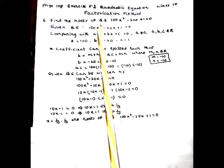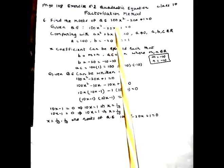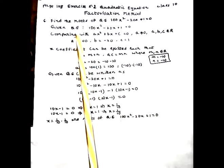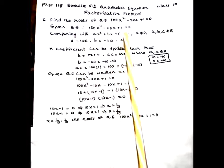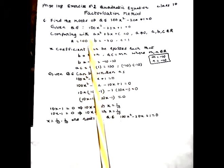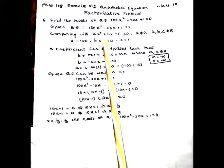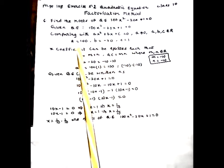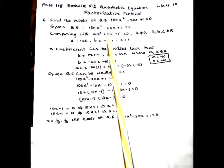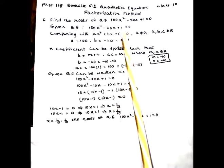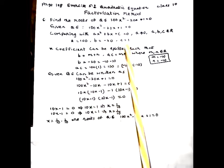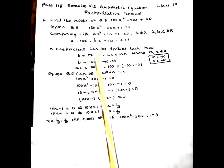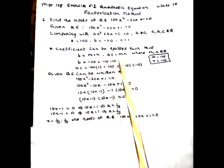Find the roots of the quadratic equation 100x² - 20x + 1 = 0 by the factorization method. Comparing with the standard form ax² + bx + c = 0, we get a = 100, b = -20, c = 1. The middle term coefficient b can be split such that b = m + n and ac = mn.